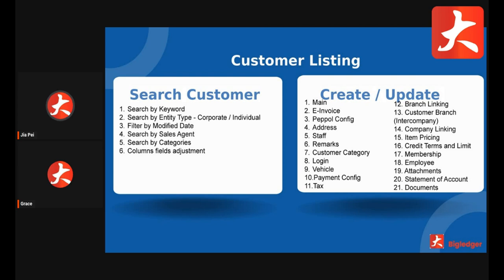In the customer listing, you can search the customer by keyword — you can search by name or by phone number. Besides that, you can search by entity type: corporate type or individual type. You can also filter the customer by modification date, search by sales agent, or search by customer categories. The customer listing can show a lot of information and you can customize your columns.